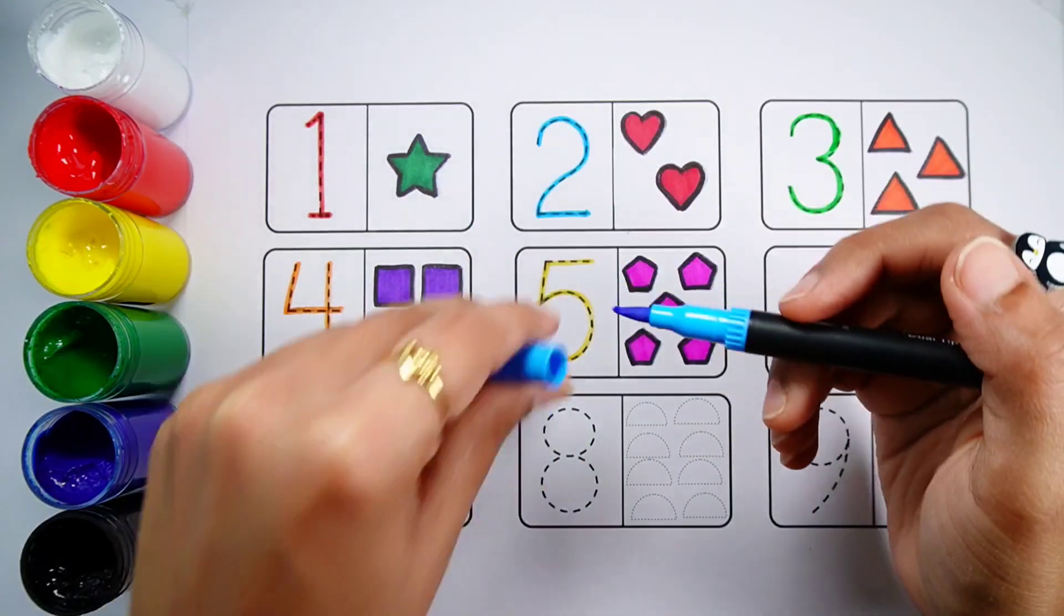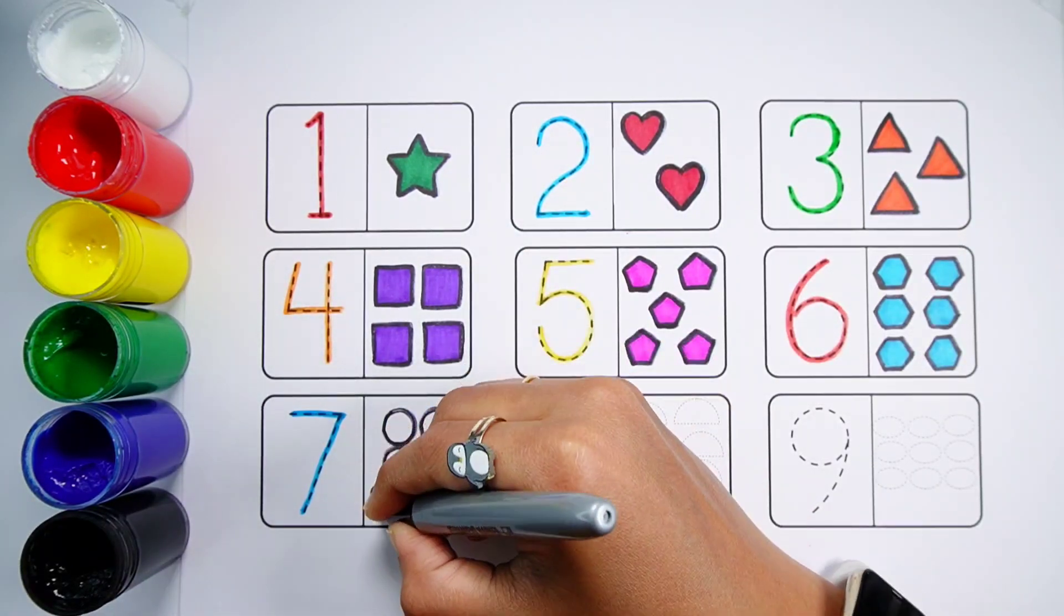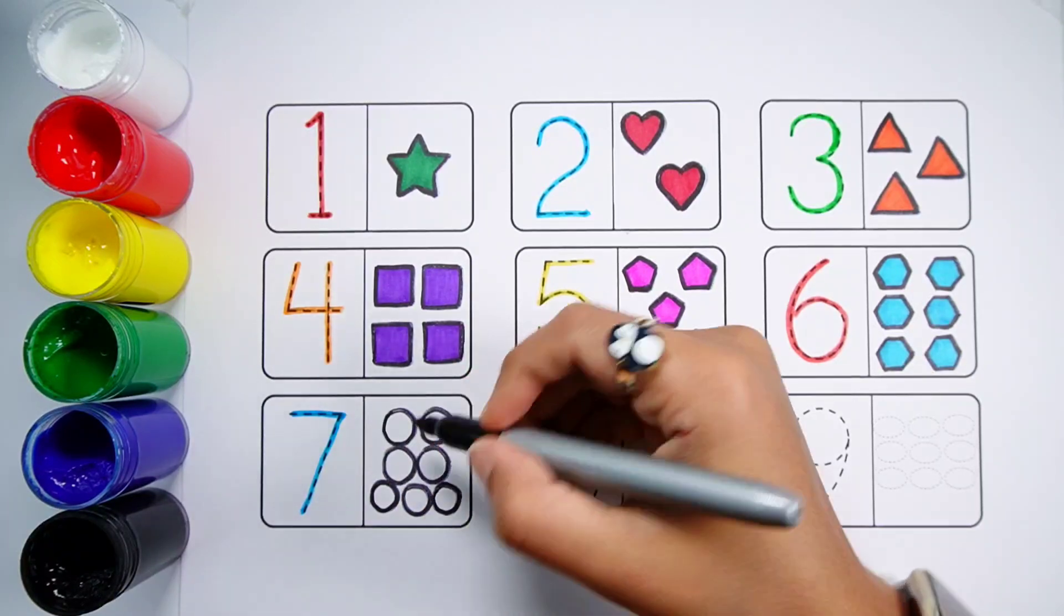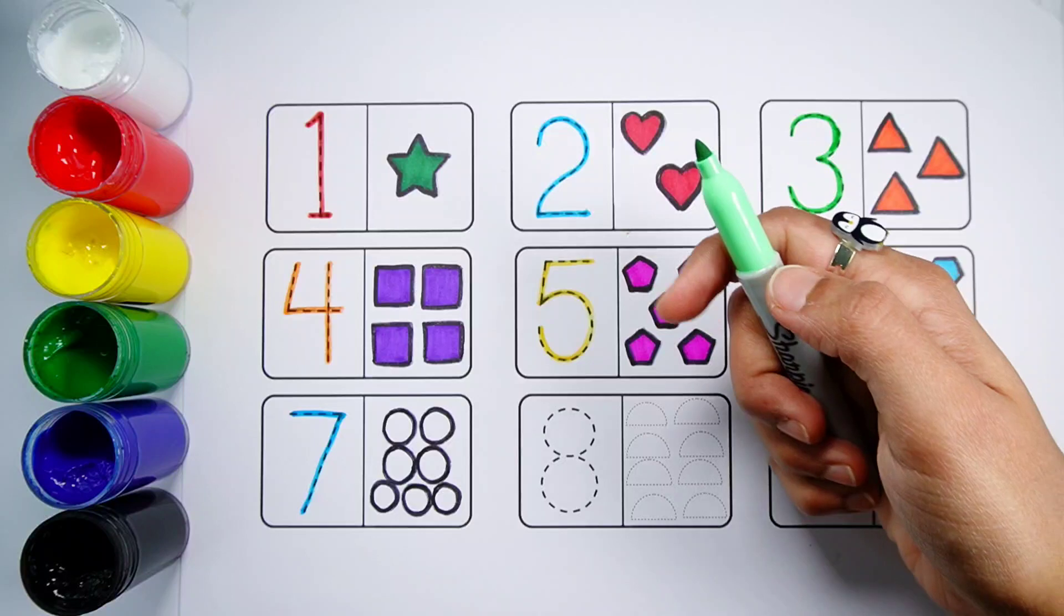Number 7. One, Two, Three, Four, Five, Six, Seven. Seven Circles. Pale Green Color.